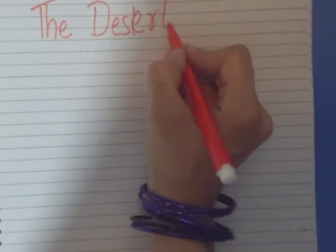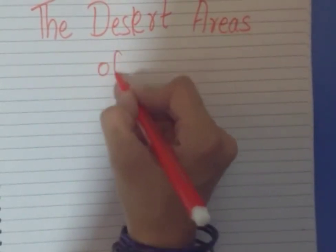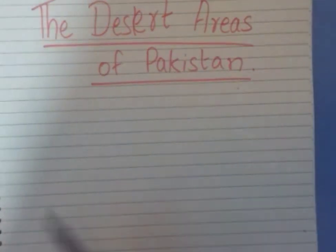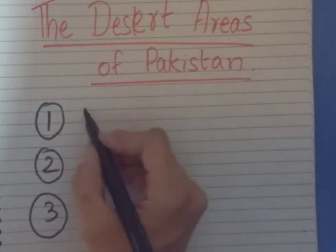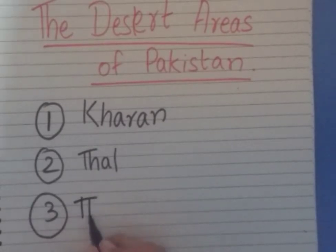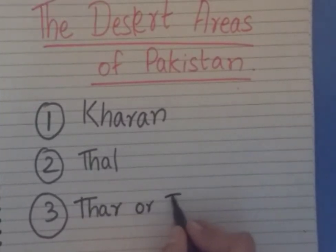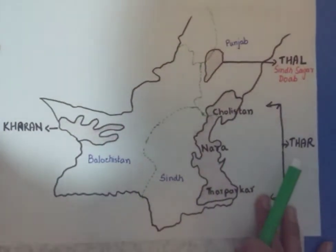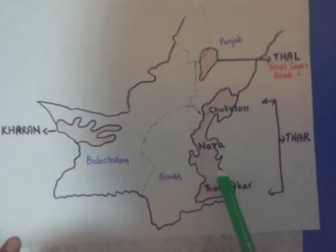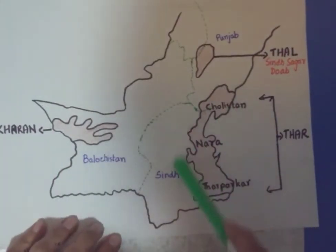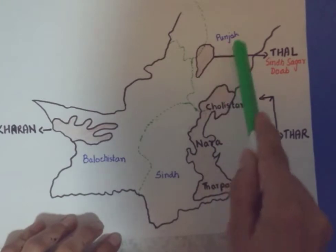Beginning with the desert areas of Pakistan — there are around 3 most important deserts. The first one is the Kharan desert, which is in Balochistan. The second is the Thal desert in Punjab, and the third is the Thar or Tharparkar desert in Sindh. If you look at the map of Pakistan, you can see the location of each of these deserts.